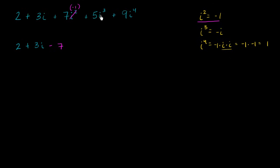And then we have 5i to the third power. i to the third power is negative i. So this could be rewritten as negative i. So this term right over here we could write as minus 5i, or negative 5i, depending on how you want to think about it.